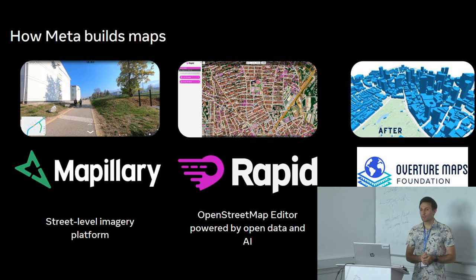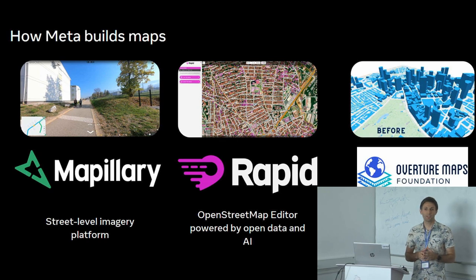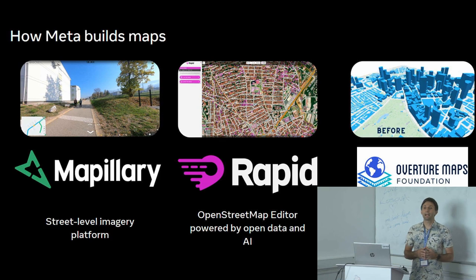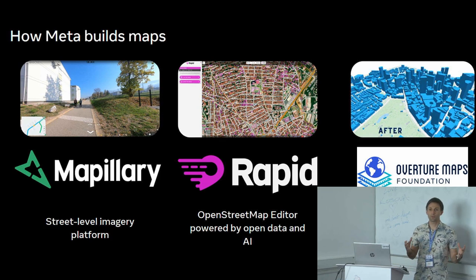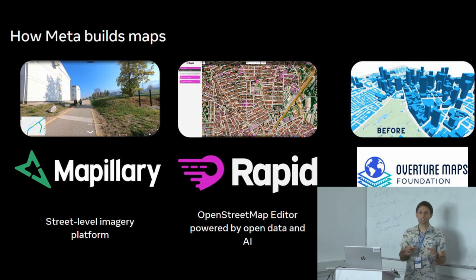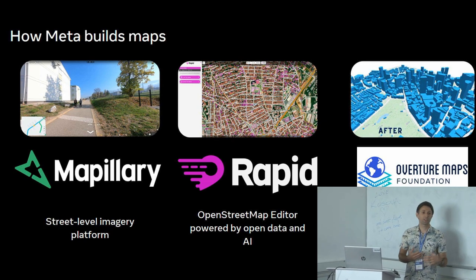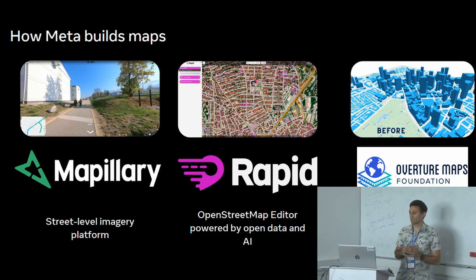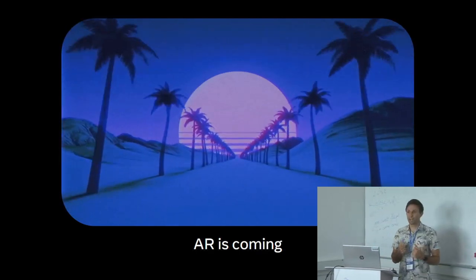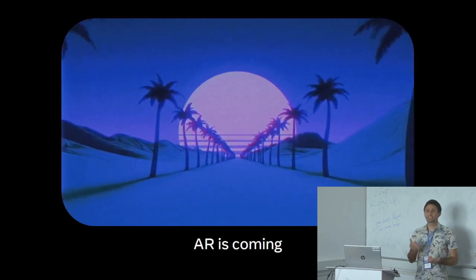A quick recap of some ways we work with the open data community. We have three big projects: Mapillary, which is a street-level imagery platform particularly important for augmented reality; the OSM editor Rapid, which uses AI and incorporates open data sets from governments into OpenStreetMap; and Overture Maps, which curates open data sources and makes them fit for purpose for navigation apps or powering Meta's use cases.